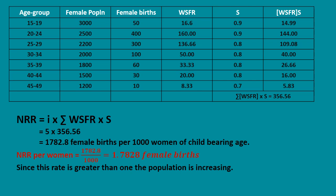The value 1782.8 represents the female births per 1,000 women of childbearing age. To get NRR per woman, divide by 1,000: NRR = 1782.8 ÷ 1000 = 1.7828 female births per woman.